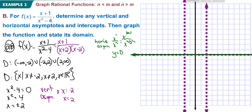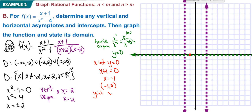Next we look at zeros and intercepts. The x-intercept is when y equals 0, so the numerator x plus 1 equals 0, giving x equals negative 1. That gives us the point (negative 1, 0). The y-intercept is when x equals 0: y equals 1 over negative 4, which is negative 0.25. So the y-intercept is at (0, negative 0.25).